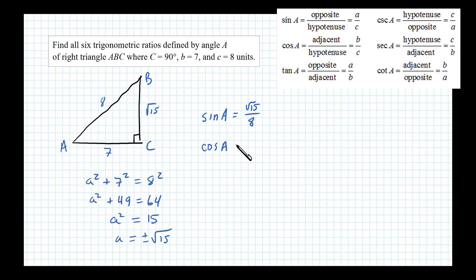Now cosine of angle A is defined to be the length of the adjacent side divided by the hypotenuse, so in this case 7/8. And then tangent of angle A is defined to be the length of the side opposite A divided by the length of the side adjacent to A.